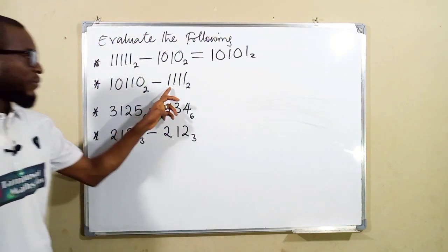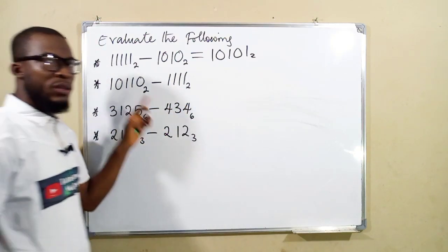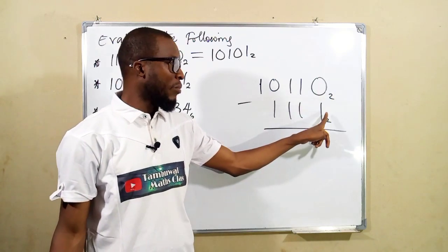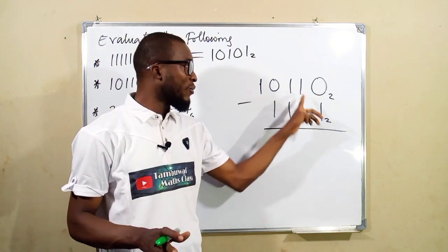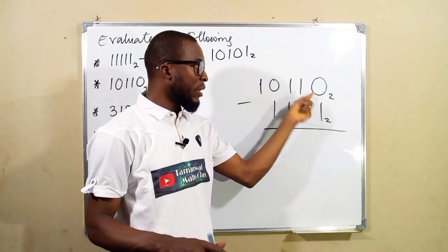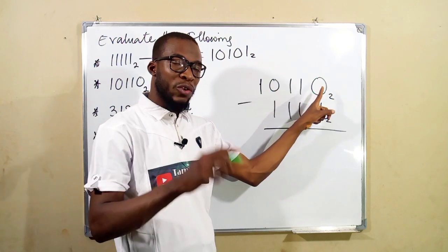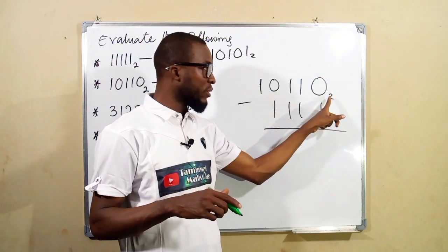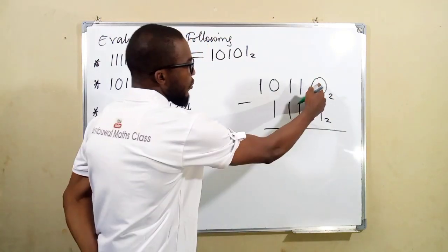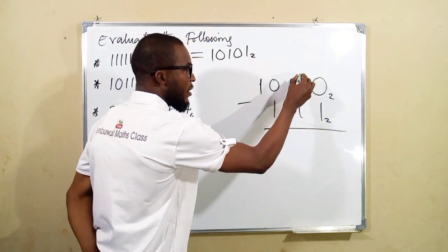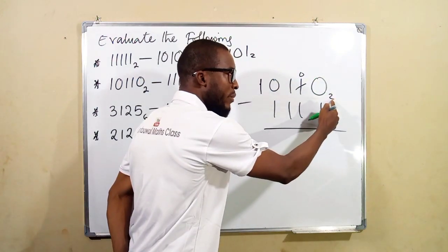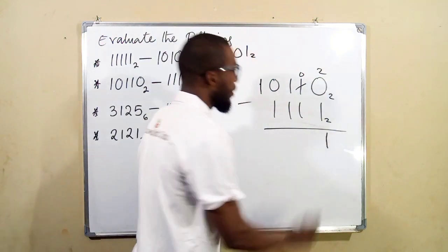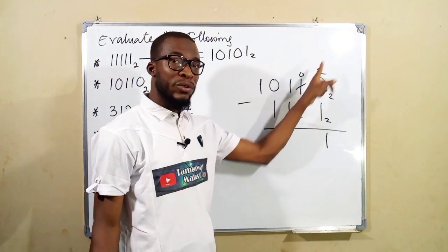The next question: we are asked to subtract 1111 from 10110 in base 2. Starting from the right, we have 0 minus 1 — it can't work, so we have to borrow one bundle. When that one bundle comes back, it will come back as 2, because that is one bundle in base 2. So 0 minus 1 can't work; we borrow, that position becomes 0, and the borrowed bundle comes as 2. Then 2 minus 1 is 1.